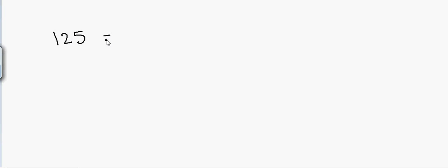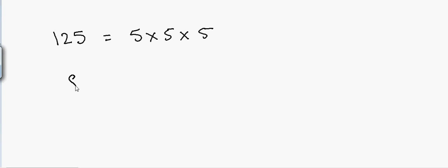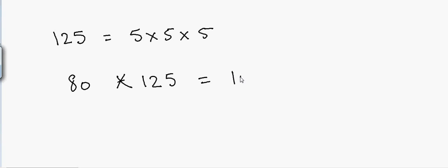Now let's say I have to multiply any number by 125. We know that 125 is 5 times 5 times 5, so instead of dividing by 4, we divide by 8. Let's take the example of 80 — I'm using 80 because it's easier to divide by 8. If I multiply 80 by 125, that equals 80 divided by 8, which is 10, and then put three zeros at the end: 10000.